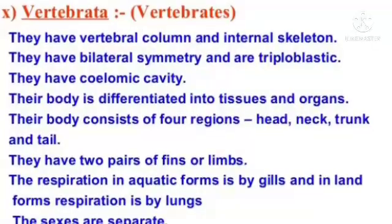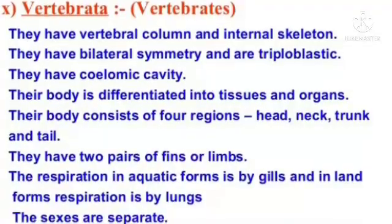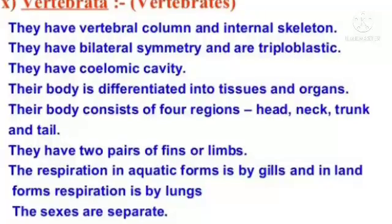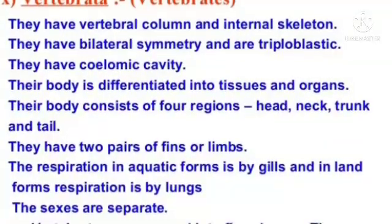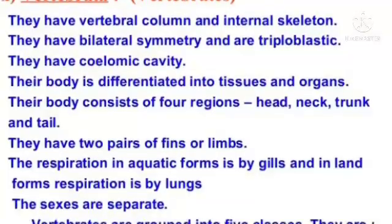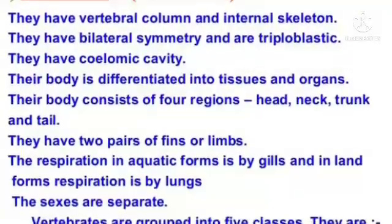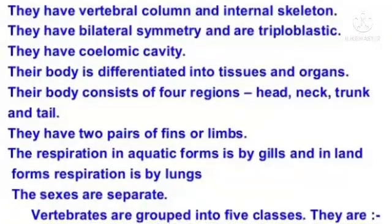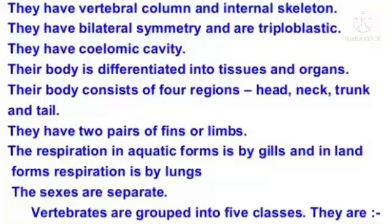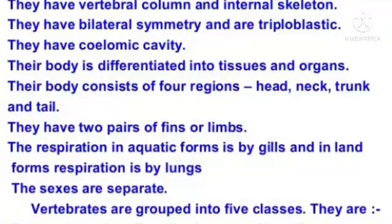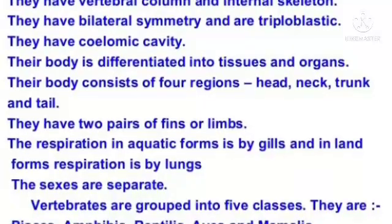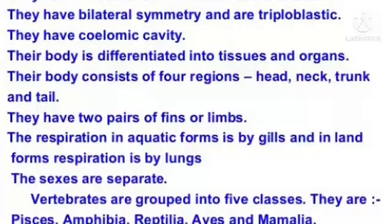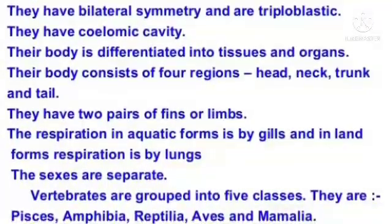Vertebrata: they have a vertebral column and internal skeleton. They have bilateral symmetry and are triploblastic with a coelomic cavity. Their body is differentiated into tissues and organs. The body consists of four regions: head, neck, trunk, and tail. They have two pairs of fins or limbs. Respiration in aquatic forms is by gills and in land forms by lungs. The sexes are separate. Vertebrates are grouped into five classes: Pisces, Amphibia, Reptilia, Aves, and Mammalia.